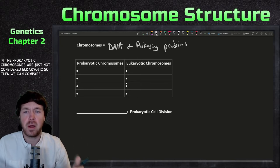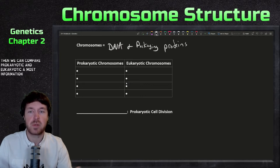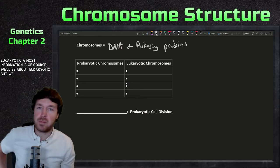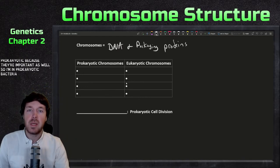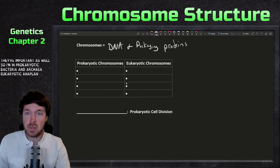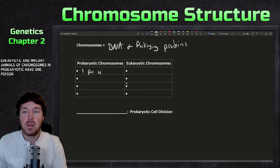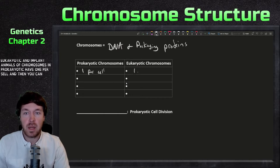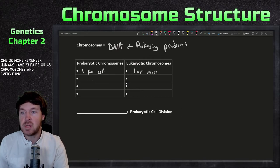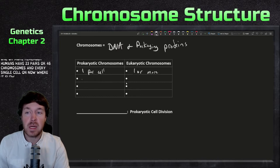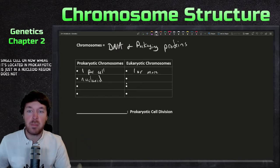So we can compare prokaryotic and eukaryotic chromosomes. Most information in this course will be about eukaryotic, but we always mention prokaryotic because they're important as well. Prokaryotic are bacteria and archaea; eukaryotic are plants, animals, us. Chromosome-wise, prokaryotic have one per cell and eukaryotic have one or more. Humans have 23 pairs, or 46 chromosomes, in every single cell.